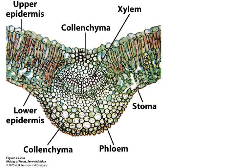Here is a picture of a slide with everything labeled: upper epidermis, xylem, collenchyma, stoma, and phloem. The question asks you to draw a row of xylem vessels. Looking at the slide, I'll try to find four xylem vessels — there are three here and one here, or you can pick another row. They must touch one another.